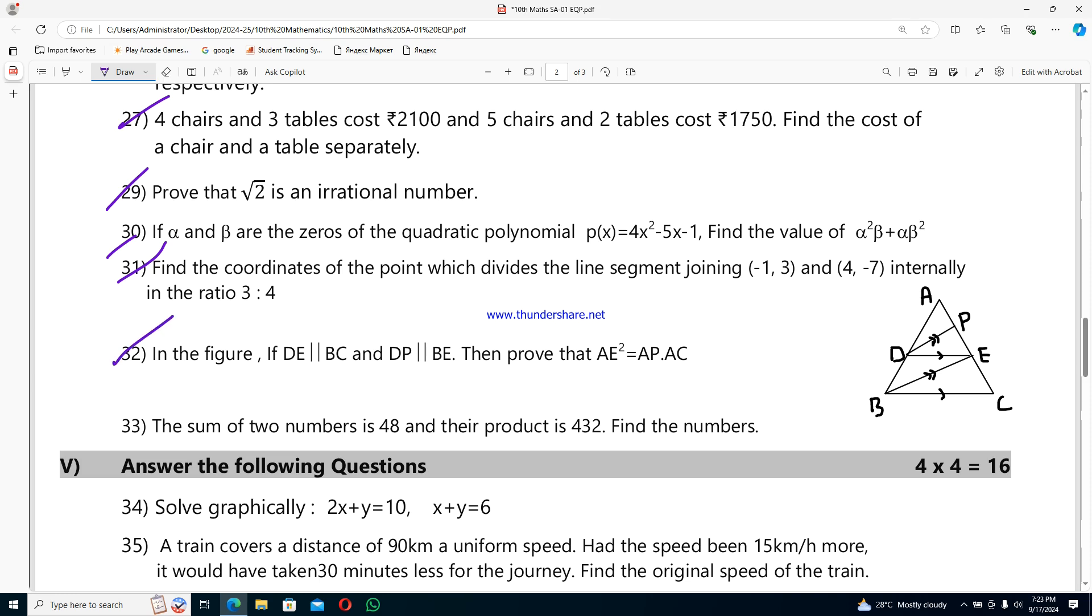Question 31: in the figure, if DE is parallel to BC and DP parallel to BE, then prove that AE²=AP·AC. Question 32: the sum of two numbers is 48 and their product is 432. Find the numbers.